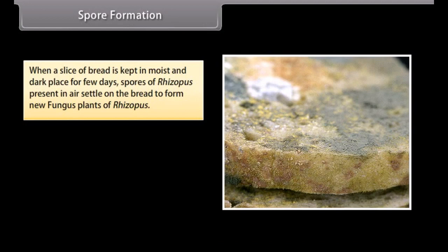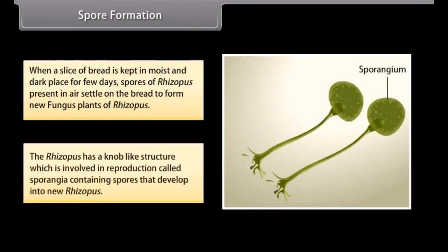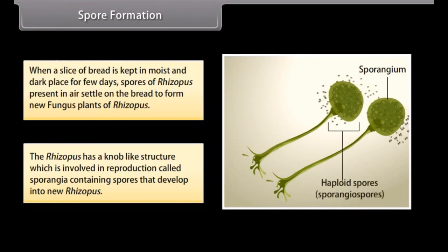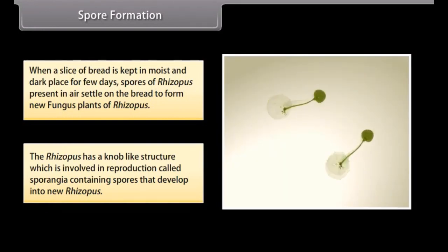Spore formation. When a slice of bread is kept in a moist and dark place for a few days, spores of Rhizopus present in the air settle on the bread to form new fungus plants. Rhizopus has a knob-like structure involved in reproduction called sporangia, which contains spores that develop into new Rhizopus.